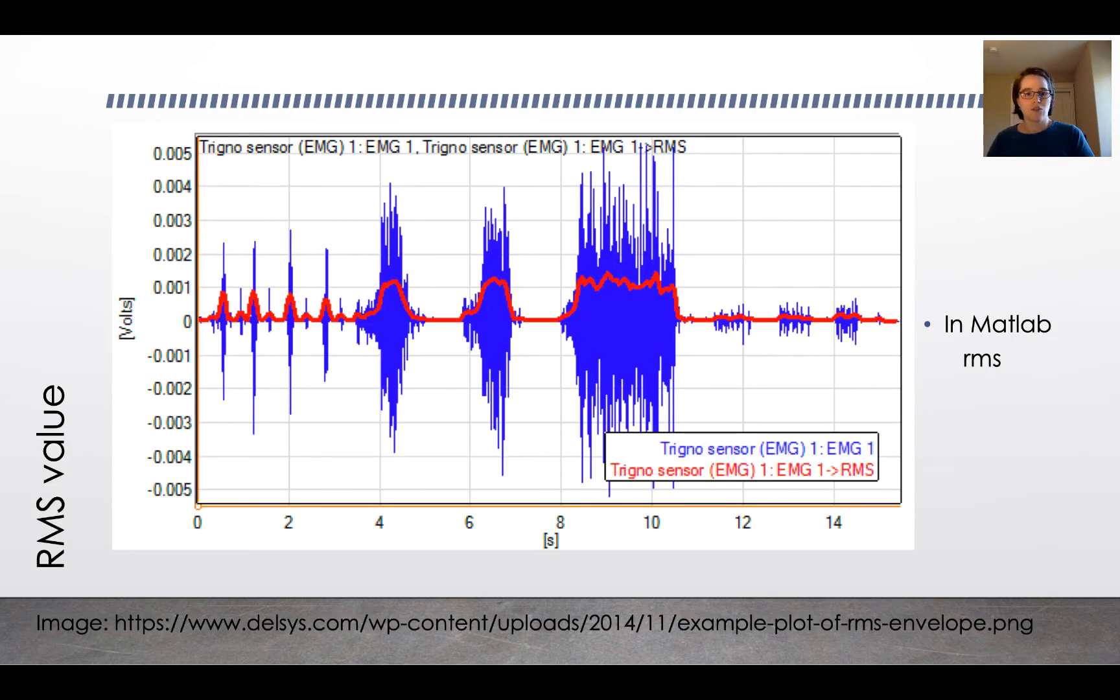Another technique that gets used when considering EMG data is to analyze the RMS value. In MATLAB there's a command called RMS. RMS stands for the root mean square value, and this is a little bit of an alternative to rectifying the signal because squaring the signal will effectively rectify the signal. You can look at how to do that with the root mean square.